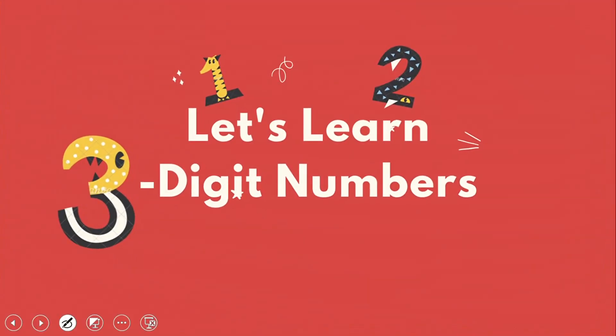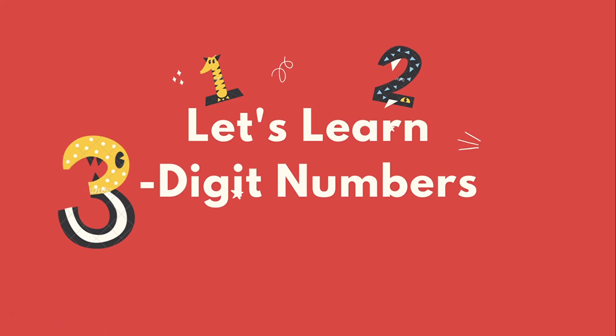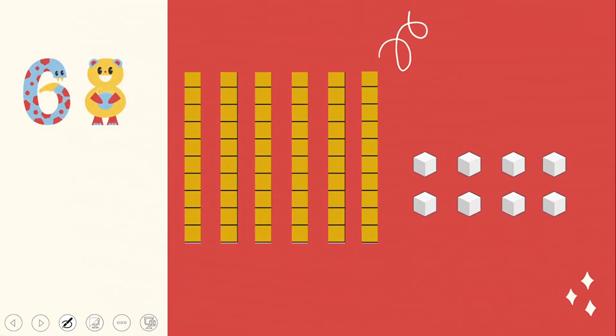Let's learn three digit numbers. Before moving to three digit numbers, let's check and revise what you already know about two digit numbers. This is a two digit number: 68. How can you represent 68 using base 10 blocks? To show the number 68, we use units and rods. Units are these small boxes that represent ones. Rods are these standing blocks that represent tens.